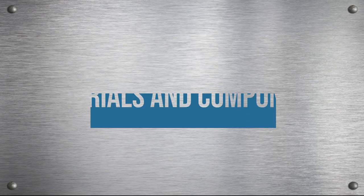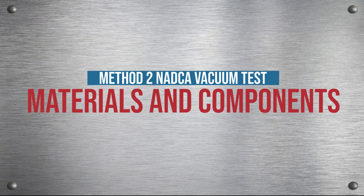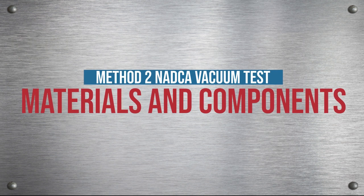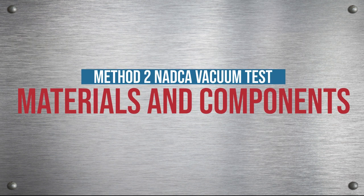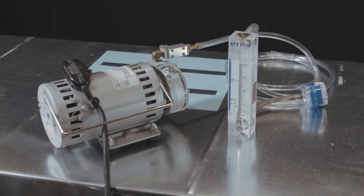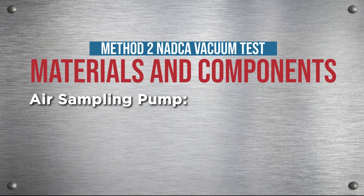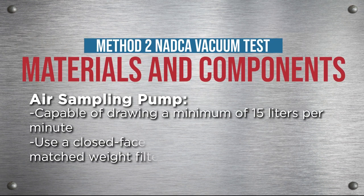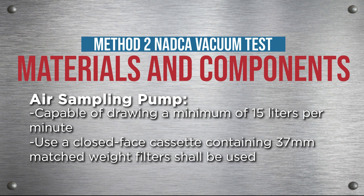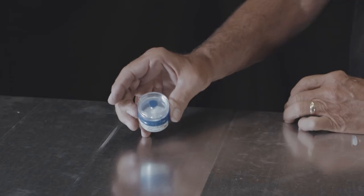The following describes the materials and test components used to perform Method 2 NADCA vacuum test verification. Air sampling pump: an air sampling pump capable of drawing a minimum of 15 liters per minute through a closed face cassette containing 37 millimeter matched weight filters shall be used.